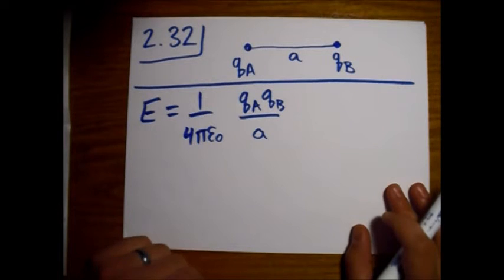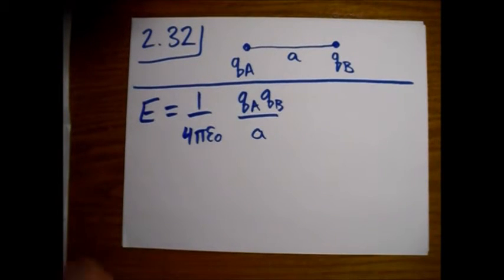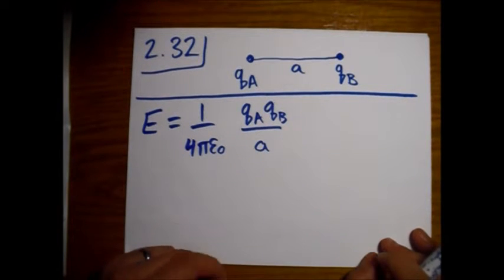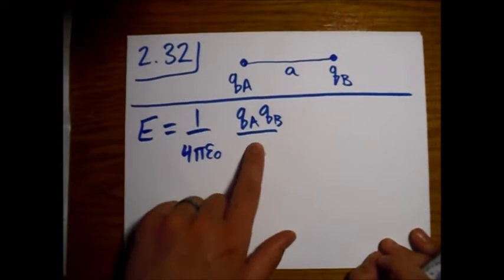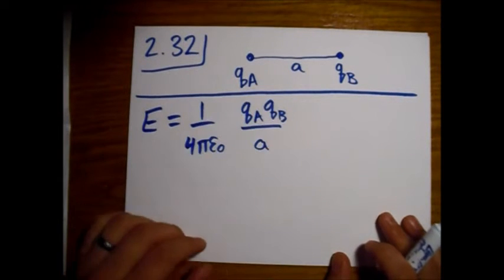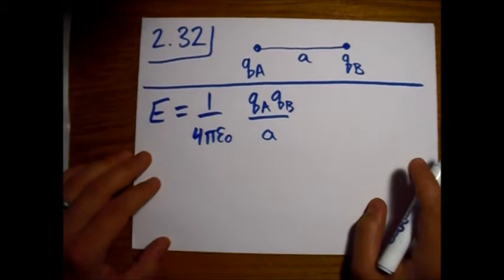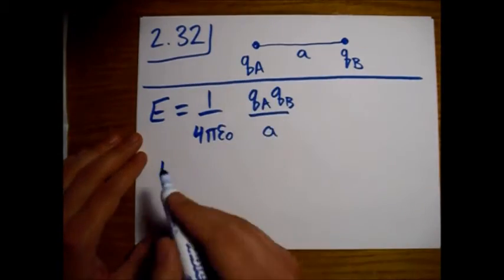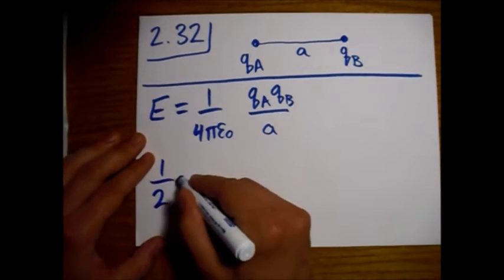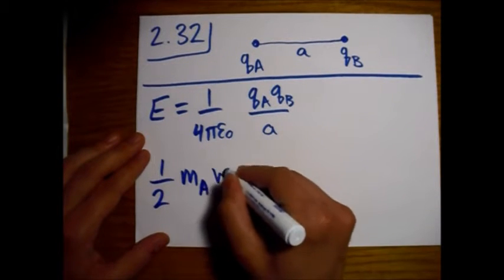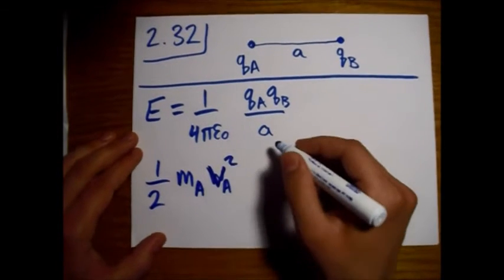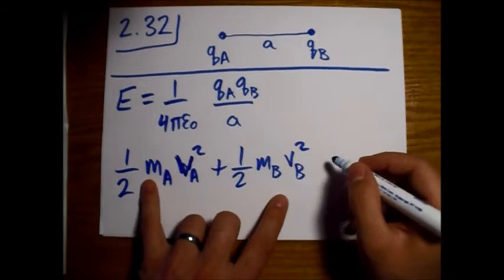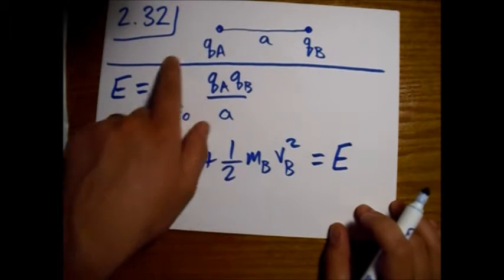Here's how much energy we have to work with. Our final goal is to find the final speeds of these two particles. Since the problem says they're far apart, we're converting all of this energy — the potential energy goes to zero at large separation. Looking at the kinetic energy of the two particles, the particles have different masses, so: one half M_A V_A squared plus one half M_B V_B squared equals this electrostatic energy we had at the beginning.